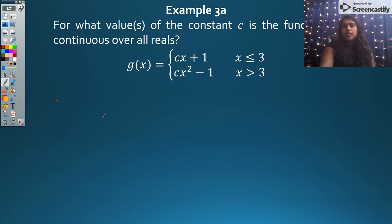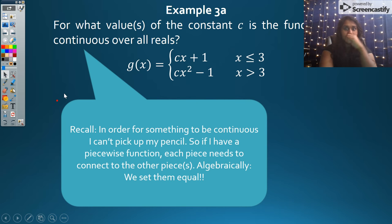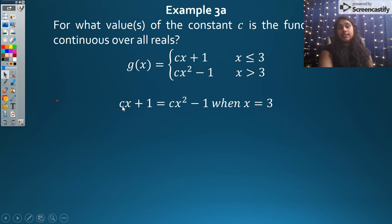What they're really asking is what is this coefficient that would make this continuous? In order for it to be continuous, shouldn't this piece of my function equal this piece of my function? Can I just set them equal to each other? Recall, in order for something to be continuous, I cannot pick up that pencil. So algebraically, we set them equal.